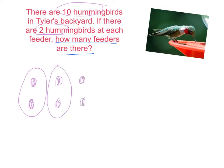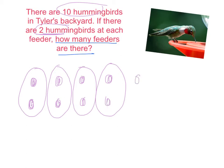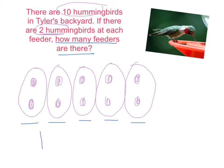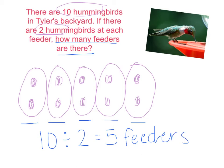Continuing to circle pairs: five and six at one feeder, seven and eight at another. I have two, four, six, eight so far — not done yet. I need to reach ten hummingbirds, so I circle the last pair. Counting the feeders: one, two, three, four, five feeders. If I have ten hummingbirds and put them into groups of two at each feeder, I end up with five feeders. In this problem I was looking for how many groups, because it told me how many were in each group.